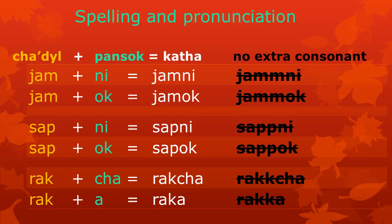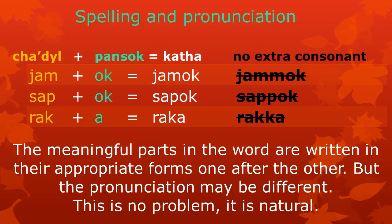The kata cha'dil jam plus the pansok ni make the word jam ni. In the same way, jam plus ok make the word jamok. When you say it slowly, it may sound like jamok — but there is no need to write an extra letter ma. The meaningful parts in the word keep their appropriate forms; the pronunciation may vary. Similarly, sap plus ok makes sapok — no need for an extra letter pa. The cha'dil rak plus pansok a makes rakka. The meaningful parts are written in their appropriate forms one after the other, but the pronunciation may be different. This is natural. The spelling very clearly shows the meaningful parts of the words.